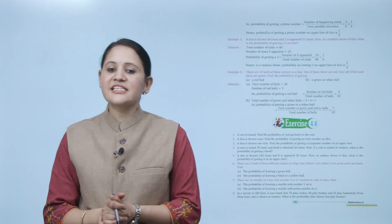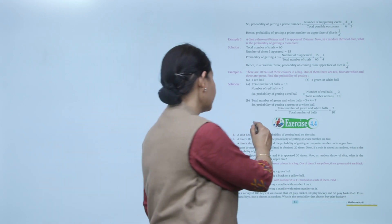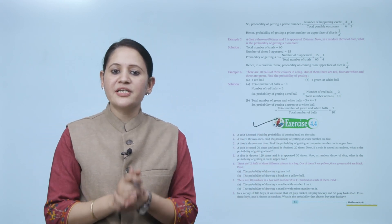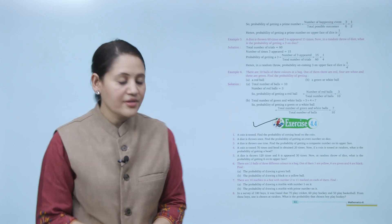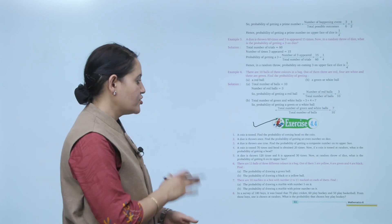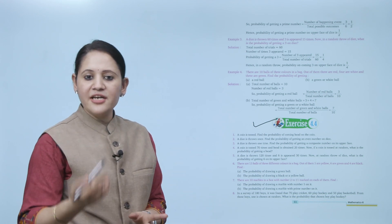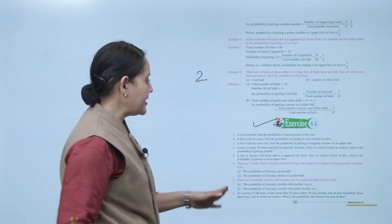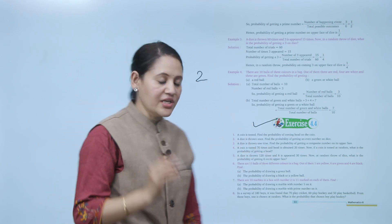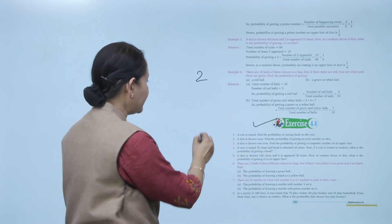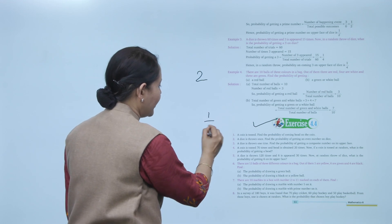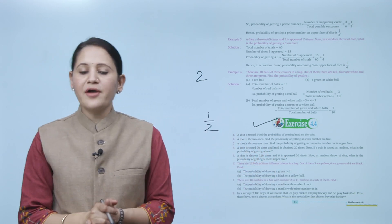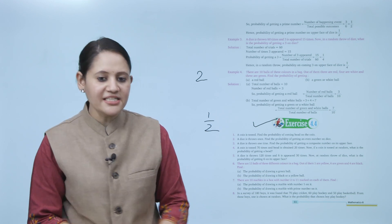Exercise 4.4: A coin is tossed; find the probability of getting head. Total outcomes are head or tail = 2. Favorable outcome (head) = 1. So probability of getting head = 1/2. Practice all questions of this exercise.